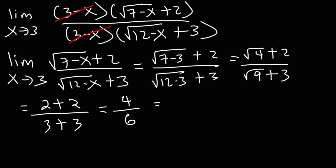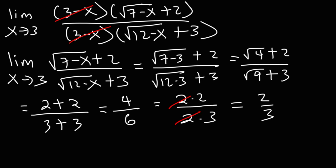So this gives us 4 over 6 as our answer, but we need to reduce the fraction. 4 is 2 times 2, and 6 is 2 times 3. Dividing both by 2, we're left with 2 over 3. So this is the final answer. 2 over 3 is basically 0.6 repeating.